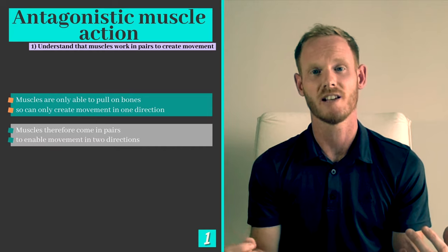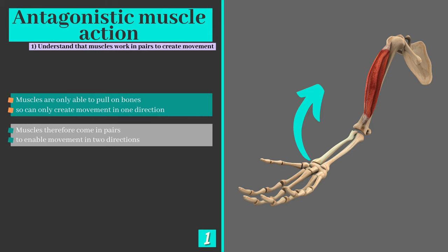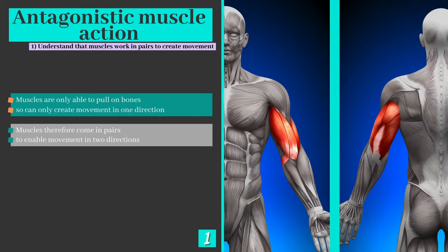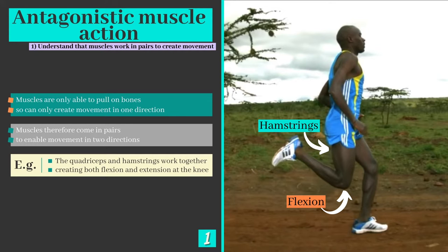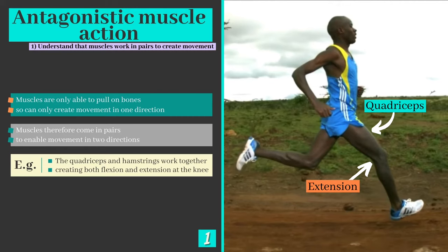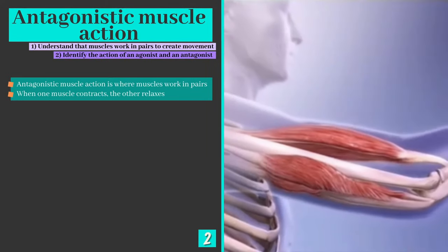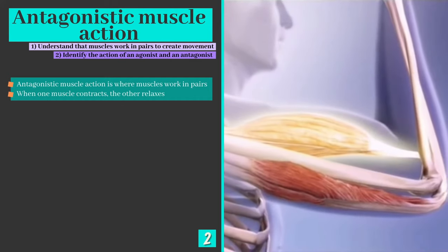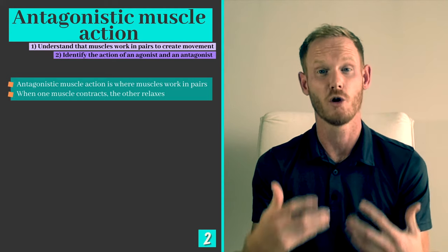Since muscles can only pull on bones, they can only create movement in one direction. The bicep is only able to pull on the forearm, so it can bend but not straighten the arm at the elbow. Therefore muscles come in pairs so that movement in two directions is possible. For example, when the hamstrings contract they pull on the bones in the lower leg producing flexion at the knee. The quadriceps are required to create the opposite movement — extension — which enables the runner to straighten their leg before the next heel strike. When muscles work in pairs it's known as an antagonistic muscle action. As one muscle contracts, the other relaxes to enable movement.